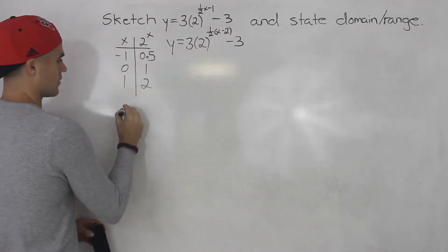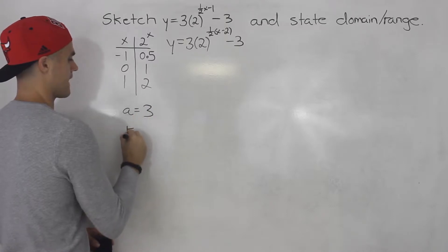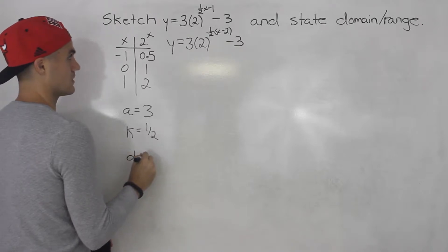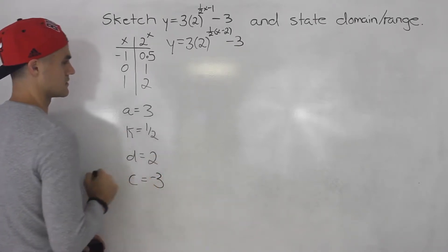So from here we could tell what's the a value. a value is 3. k value is 1 half. d value is positive 2. c value is minus 3.